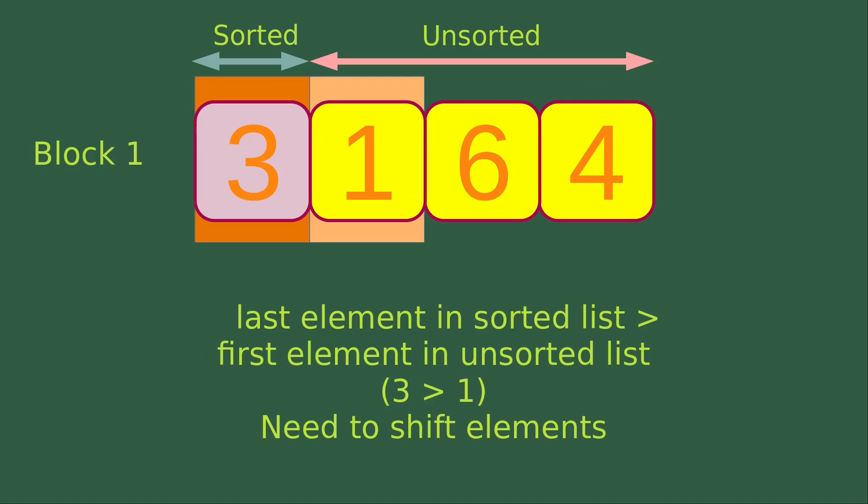Now let's take a look at Block 1. When we want to do insertion sort, the first element is the sorted portion and the remaining numbers are put in the unsorted portion. We can see that the last element in the sorted list is larger than the first element in the unsorted list. For example, in this diagram, we see that 3 is larger than 1, so we have to shift the elements.